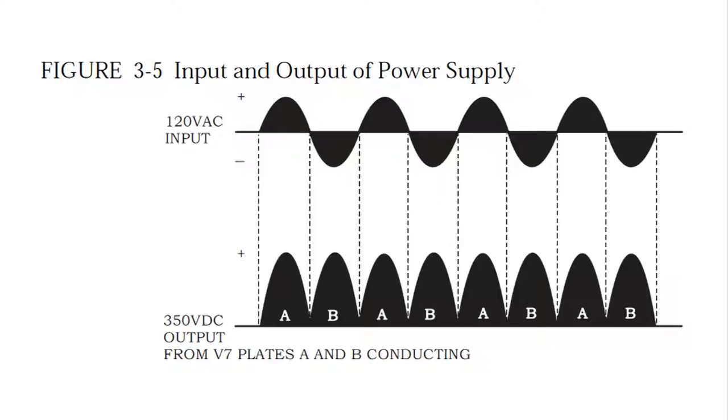And this is on the primary side of the power transformer. And the bottom line is after the 5Y3 has rectified the high voltage. And we end up with A and B, about 350 volts, and it's all positive.